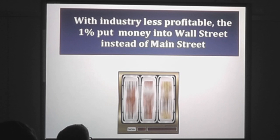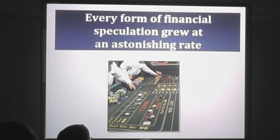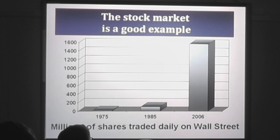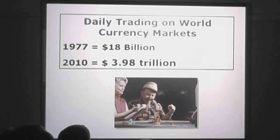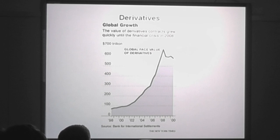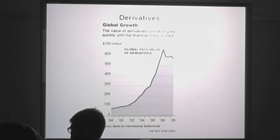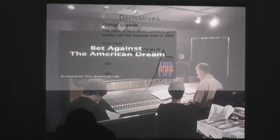With industry less profitable, the 1% put the money into Wall Street instead of Main Street. Every form of financial speculation grew at an astonishing rate — the stock market, currency speculation, and derivatives: the financial instruments based on bad mortgages that people didn't know were bad mortgages. We're seeing the financialization of the economy. This is true in all mature capitalist economies where economic growth tends to stagnate — it's happening in Europe, it's across the board, and they haven't a clue what to do about it.